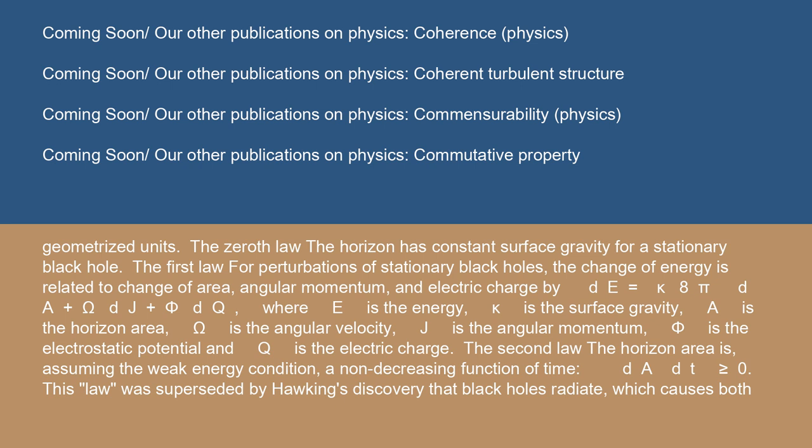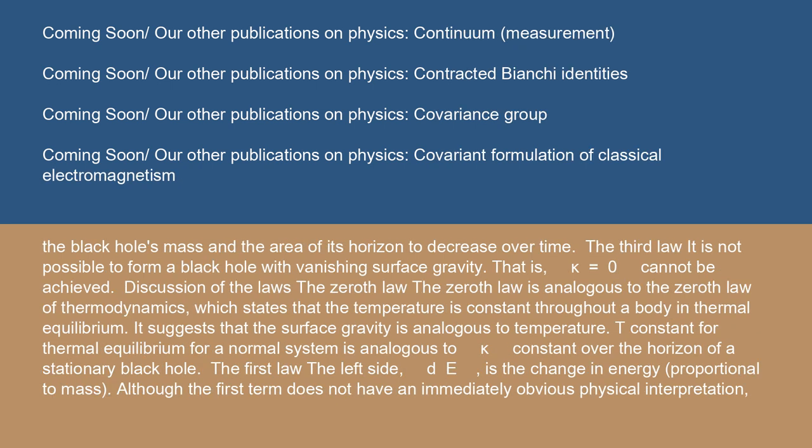The second law: The horizon area is, assuming the weak energy condition, a non-decreasing function of time: dA/dt ≥ 0. This law was superseded by Hawking's discovery that black holes radiate, which causes both the black hole's mass and the area of its horizon to decrease over time.